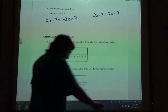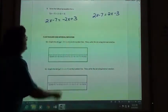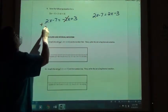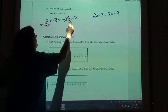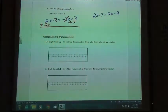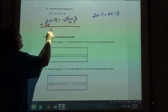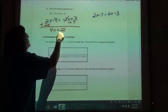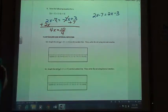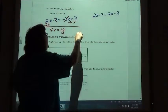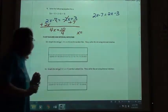So solving my first one, I'm going to add my 2x and add my 7 and so I get 4x is going to equal 5 over 2.